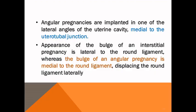We should differentiate from angular pregnancy. Angular pregnancy is implanted in the end of the lateral angle of the uterine cavity, medial to the utero-tubal junction. Intraoperatively, we can differentiate between them. If the pole of the pregnancy is medial to the round ligament, it is angular; if lateral to the round ligament, it is called interstitial pregnancy.